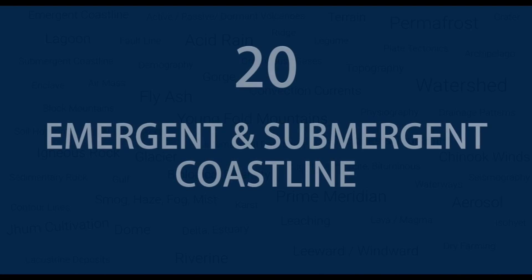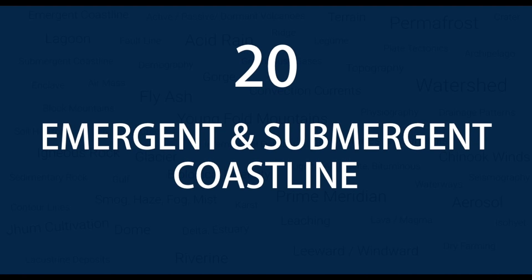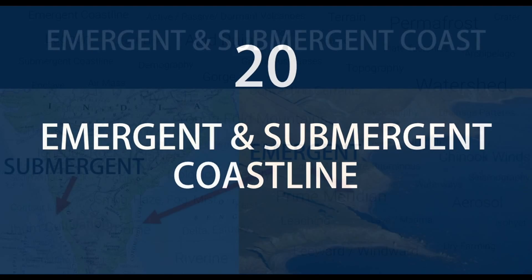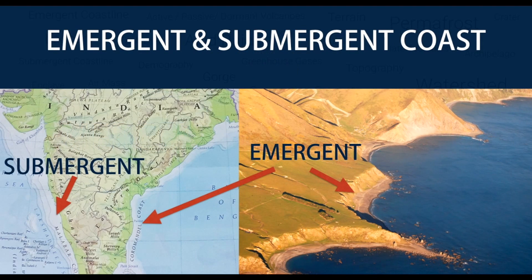Number 20 — Emergent and Submergent Coastlines. An emergent coastline is a stretch along the coast that has been exposed by the sea by a relative fall in sea levels. Submergent coastlines are stretches along the coast that have been inundated by the sea by a relative rise in sea levels.